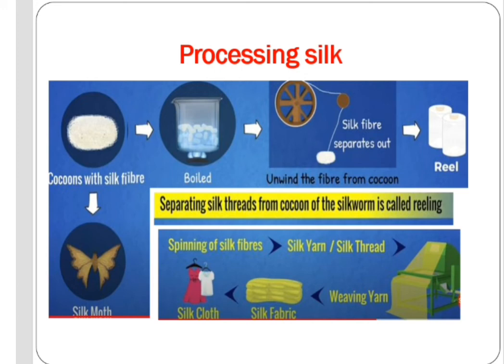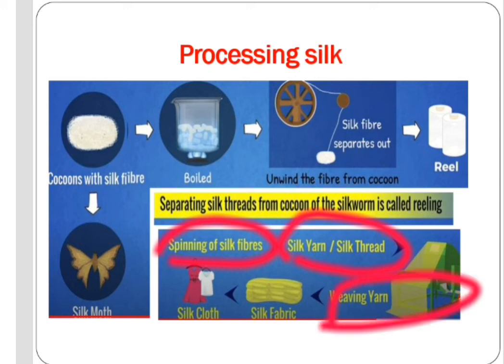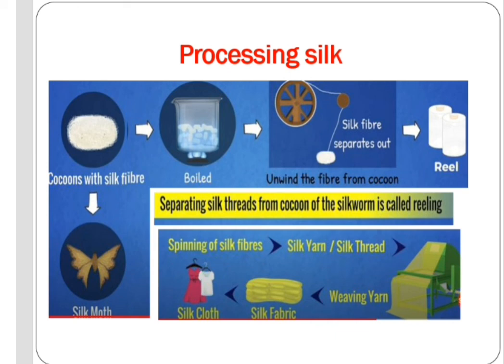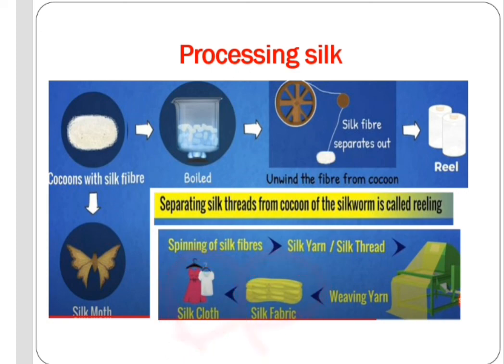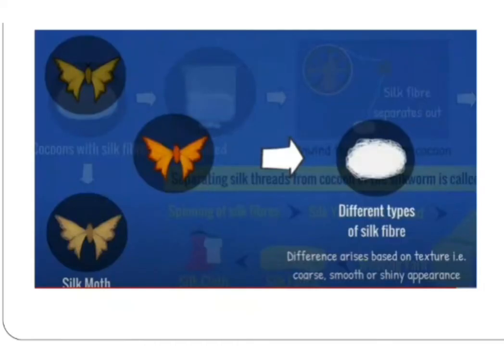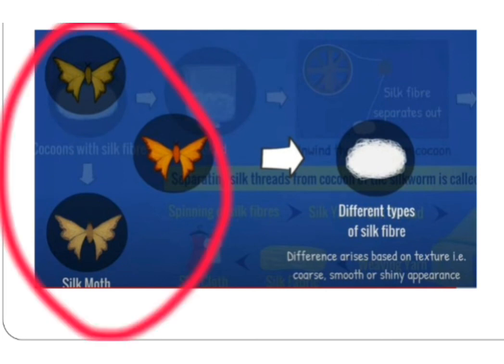The spinning of silk fibers produces silk yarn or silk thread by weaving yarn. From this, silk cloth can be formed.